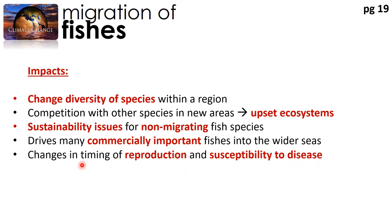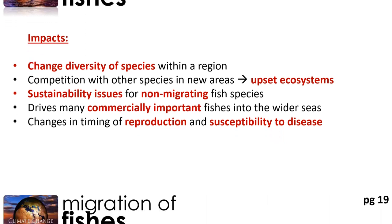Furthermore, increasing sea temperatures are causing changes to the timing of reproduction in these fish species and their susceptibility to disease. For instance, warmer temperatures have affected the life cycle of the salmon and increased their likelihood to fall to disease. Combined with other climate impacts, these effects are projected to lead to large declines of salmon populations.